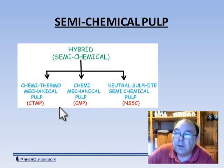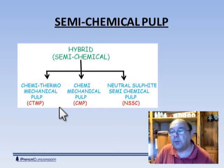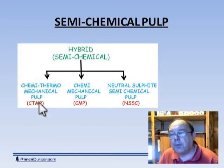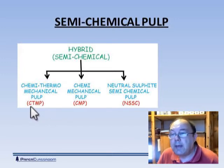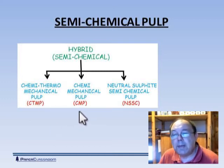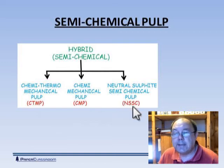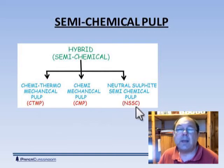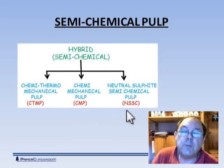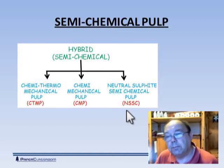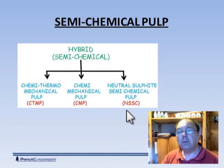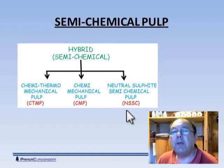The hybrid methods are semi-chemical pulps. Here are three examples: CTMP — chemi-thermal mechanical pulp — is a very common pulp; CMP — chemi-mechanical pulp; and NSSC — neutral sulfite semi-chemical — which was mainly used for fluting, the wiggly bit inside cardboard, but has now generally been replaced by recycled fibre.